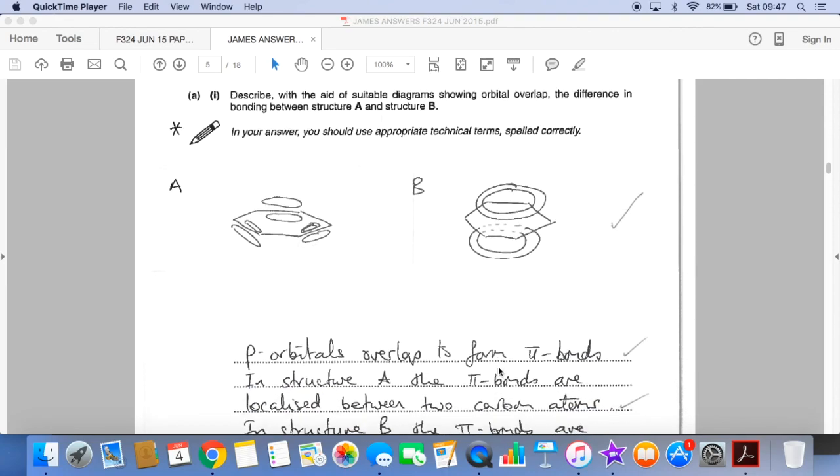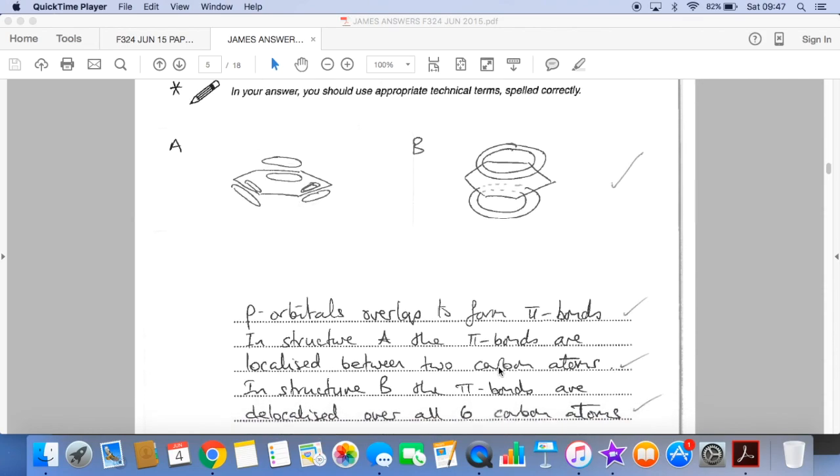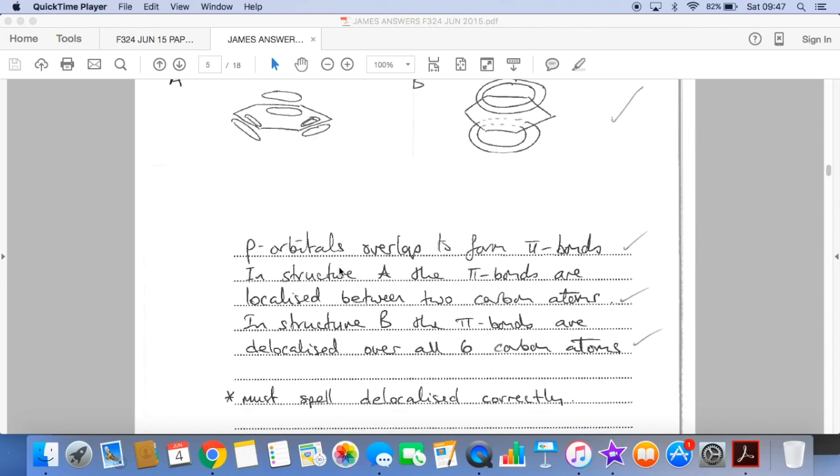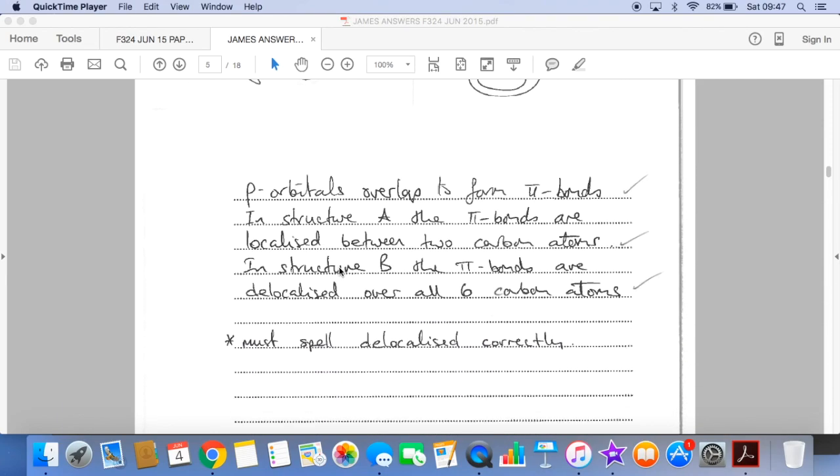So P orbitals overlap to form pi bonds. In structure A, the pi bonds are localised between two carbons. And in structure B, the pi bonds are delocalised over all six carbons. And the quality of written communication mark was going for spelling the word delocalised correctly.